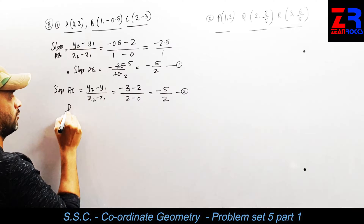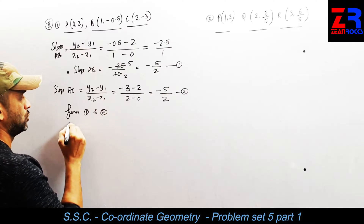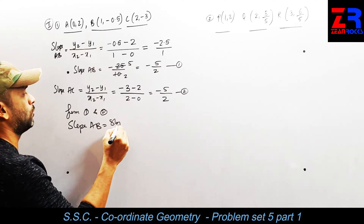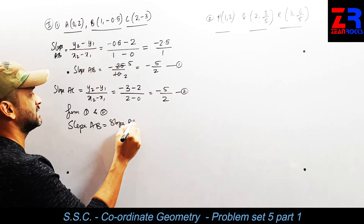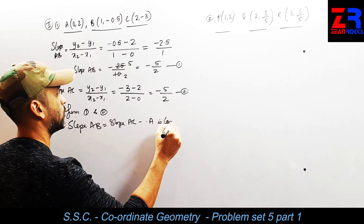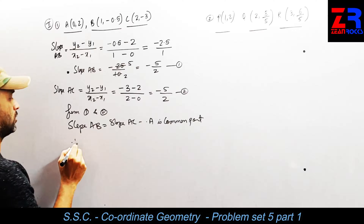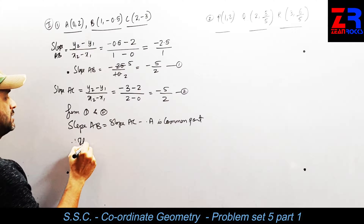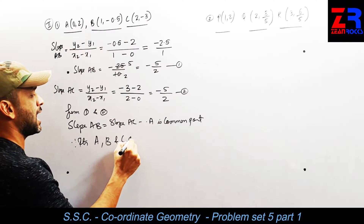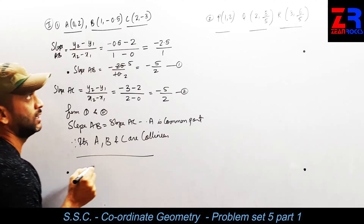From equations 1 and 2, slope of AB is equal to slope of AC, and A is the common point. Therefore, points A, B, and C are collinear. Hope this is clear — it is very simple.